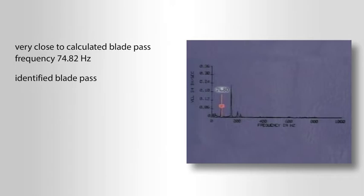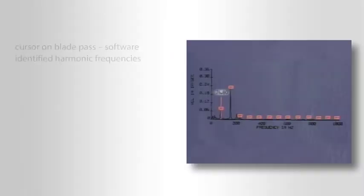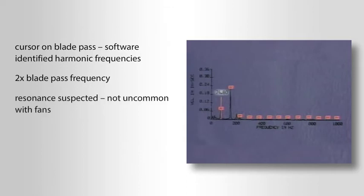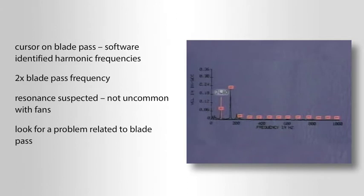So far, a low-amplitude one-times and a blade pass frequency are very much what we would expect to find — that is step five. But when we place the cursor on the blade pass, the software identified harmonic frequencies with a high-amplitude peak at two times the blade pass frequency. Because the blade pass harmonics could not be readily explained, resonance was suspected. Resonance is not uncommon with fans, but let's not draw conclusions yet. For now, let's continue to look for a problem somehow related to blade pass.